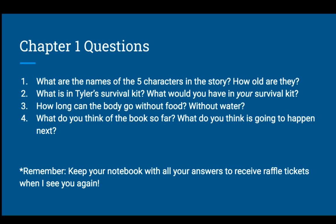Number one: what are the names of the five characters in the story and how old are they? Number two: what is in Tyler's survival kit and what would you have in your survival kit? Number three: how long can the body go without food, without water? And number four: what do you think of the book so far and what do you think is going to happen next? Remember, keep your notebook with all your answers to receive rocket tickets when I see you again. This is why I'd like you to have a notebook — so I can look at all your pages with your questions and answers, and I will give you credit and raffle tickets.